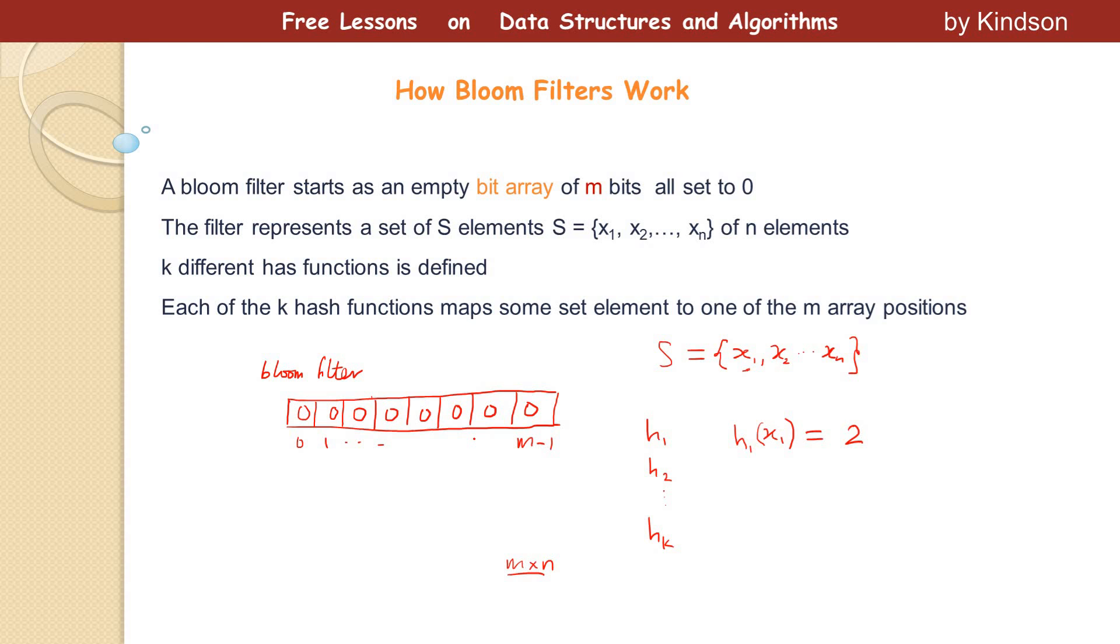So it means that we go to position two in the Bloom Filter and set it to one. Remember, a Bloom Filter is a bit array, meaning that it's only one and zero. So we go to position two, that is here, and then set it to one. So let me erase this and then set it to one. After passing H1 through H1, we also pass it through H2, the same element. We pass it through H2, and let's say it gives us five. So what do we do? We go to position five, this is position five, and set it to one, right? So this is basically how it works.